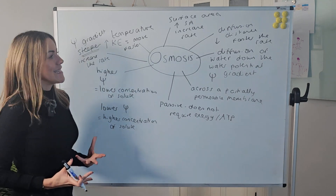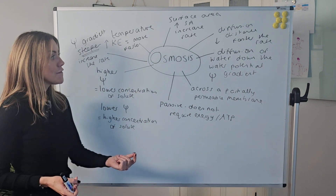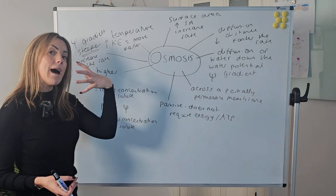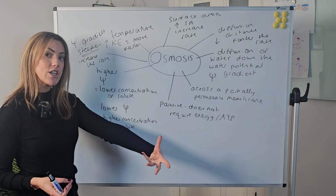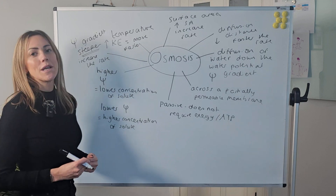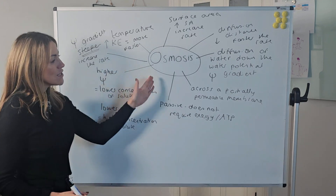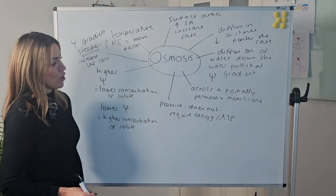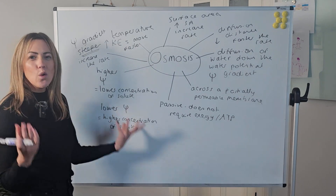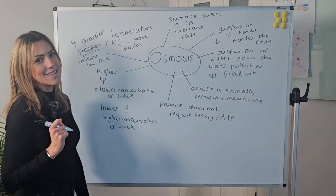To quickly compare osmosis to diffusion: like diffusion, it is passive, and involves movement of particles from higher concentration to lower concentration. But with osmosis it's specifically water, so we call it a water potential gradient, and osmosis always takes place across a partially permeable membrane. That's pretty much all you need to know as a good starter for osmosis.